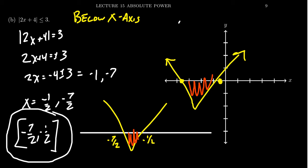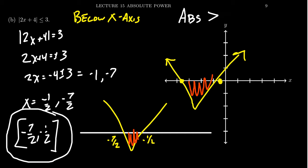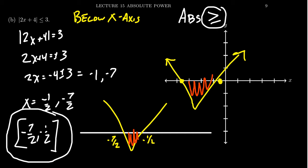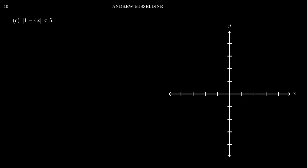So whenever you have absolute value less than or equal to some number, that tells you below the x-axis. Less than or equal to versus less than just determines whether we include the markers. In contrast, greater than means above the x-axis, and greater than or equal to is also above the x-axis. Assuming the absolute value is on the left, greater than means above and less than means below — which makes intuitive sense from the symbols.